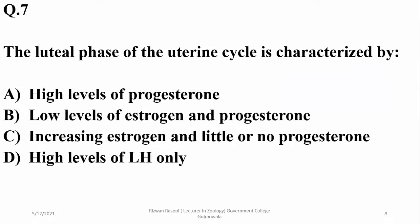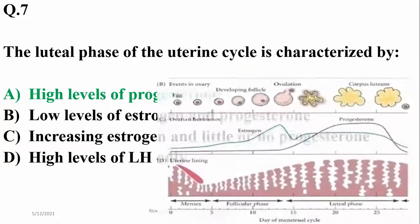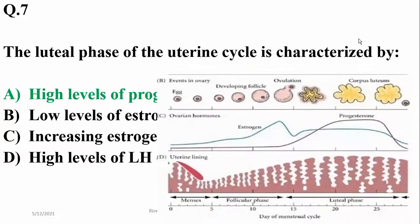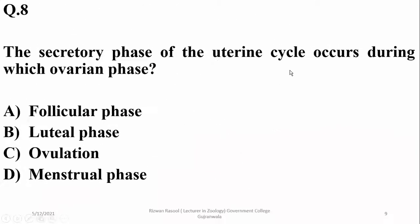Question number seven: the luteal phase of the uterine cycle is characterized by high levels of progesterone. As you can see, progesterone is at maximum level during the luteal phase. Question number eight: the secretory phase of the uterine cycle runs parallel to the luteal phase, so the answer is beta.